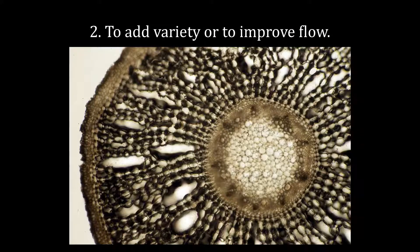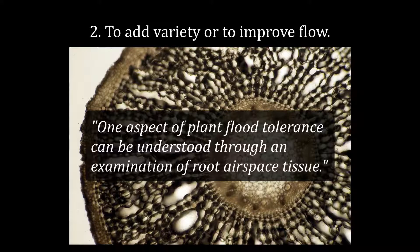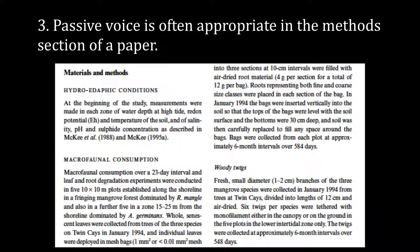You might also use passive voice for variety or when the flow of the paragraph would be improved — for example: 'One aspect of plant flow tolerance can be understood through an examination of root airspace tissue.' Passive voice is also often used in the methods or experimental section of a paper, where passive construction is not only appropriate but often preferred in describing the methods.